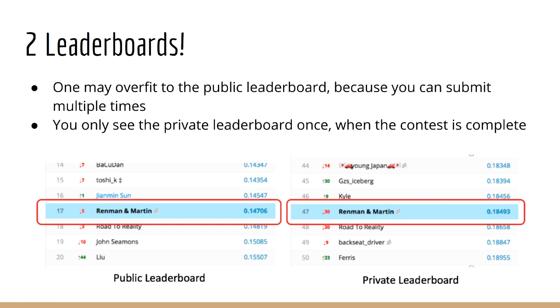The public leaderboard allows you to submit a solution multiple times, so you have some chance of overfitting to it. On the other hand, you only know your private leaderboard placement once, at the end of the contest. So in fact, to confuse you even more, now there is not just the train set, the validation set, and the test set, but there is yet another test set.